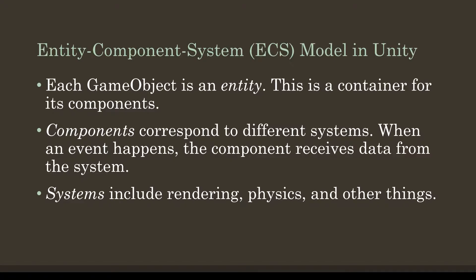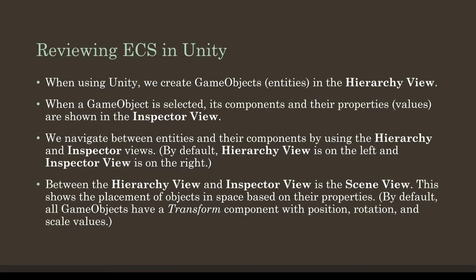In Unity specifically, we create game objects. These are the core units of Unity — the entities. We create them as part of the hierarchy view, which shows the order in which objects relate to each other, either within the same scene or as parent or child of each other. When we select a game object in the hierarchy view, we see its components and their properties and values as shown in the inspector view.